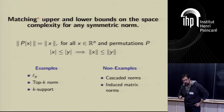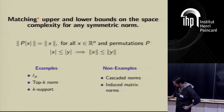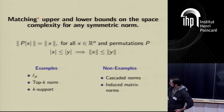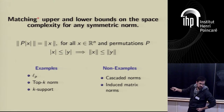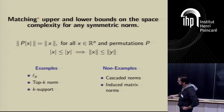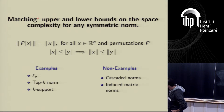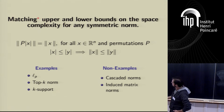Symmetric norms have an important monotonicity property. This is not true for all norms, but for symmetric norms: if |x| ≤ |y| coordinate-wise, then the norm values respect the same order. So if I increase x, I get a bigger norm. It's not true for all norms.